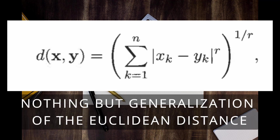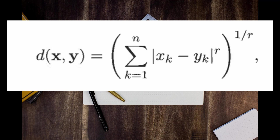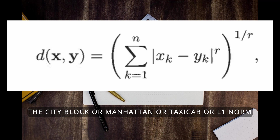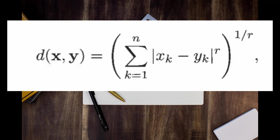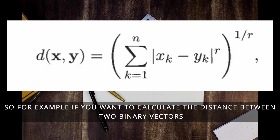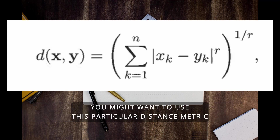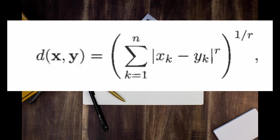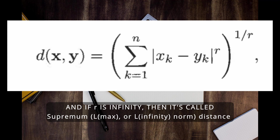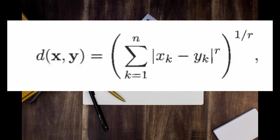Another distance metric is the Minkowski distance, which is a generalization of Euclidean distance. It depends on parameter r. If r equals one, it's called the city block, Manhattan, taxicab, or L1 norm distance. A common example is the Hamming distance — the number of bits that are different between two objects with only binary attributes, useful for binary vectors. If r equals two, it's simply the Euclidean distance. If r is infinity, it's called the supremum, L-max, or L-infinity norm — the maximum difference between any attribute of the objects.